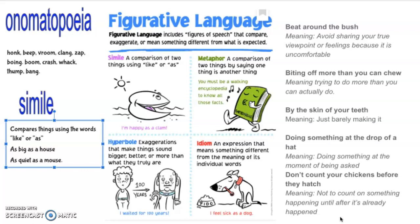The second one: 'biting off more than you can chew.' That doesn't mean you're actually biting something off — it means taking on too much work, committing to doing more than you can really do. The next one is 'by the skin of your teeth.' If you just read the words, you don't have skin on your teeth, so it doesn't make any sense. But it's an idiom — it means you just barely made it.